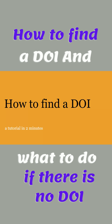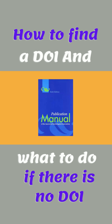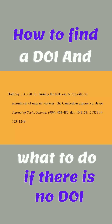How to find a DOI — a tutorial in two minutes. For both print and electronic articles, APA style requires that you include a DOI, or digital object identifier, at the end of your article references. A DOI is a unique number assigned to an article to aid in finding the article online.